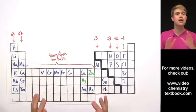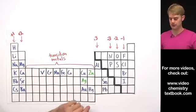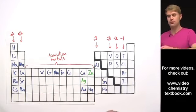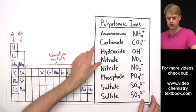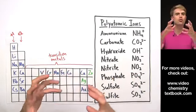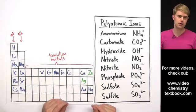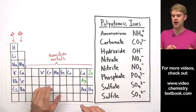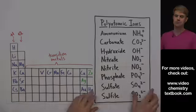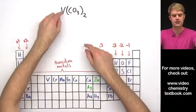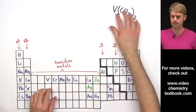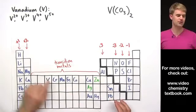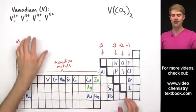So far in all of our examples, the negative ion has been a single element — bromide, sulfide, or nitride. But it's also possible for transition metals to form compounds with polyatomic ions, which are groups of atoms that together have a charge. Here's our last example: V(CO₃)₂. The V is vanadium, a transition metal able to make four different types of ions: 2+, 3+, 4+, and 5+.